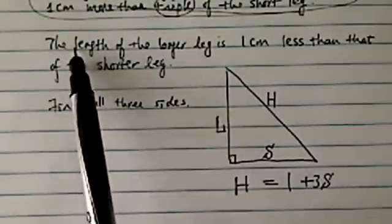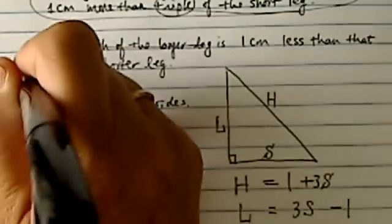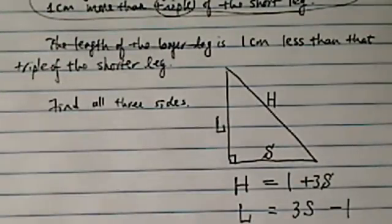Second equation says the length of the longer leg, we'll call it L, 1 centimeter less, so something minus 1, and is triple of the short leg. Triple of the short leg. Okay, so the second sentence got into an equation as well.